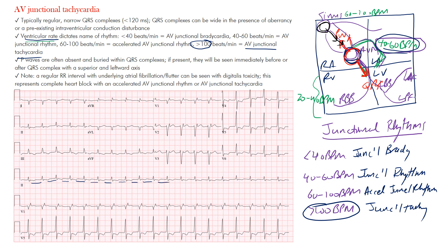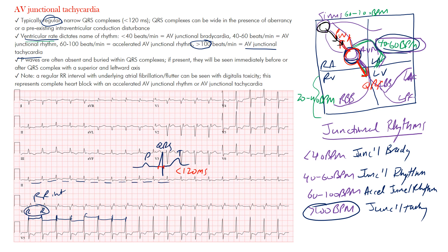This is a regular rhythm — the R-to-R intervals, from one R wave to the next, are about the same duration, confirming regularity. The QRS complexes are narrow in this case. For reference, we have the P wave, QRS complex, and T wave. The QRS duration from beginning to end should be less than 120 milliseconds, or three small boxes — that's normal. There could be an intraventricular conduction delay already present that widens it, but normally you'll see it narrow. So: no P waves, regular rhythm, narrow complexes — now we need to calculate the ventricular rate.